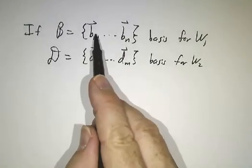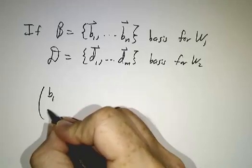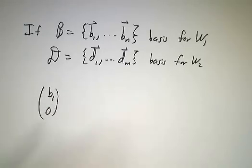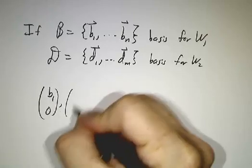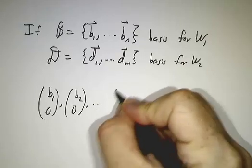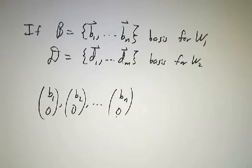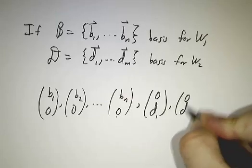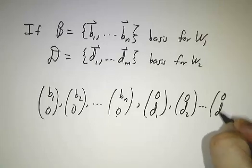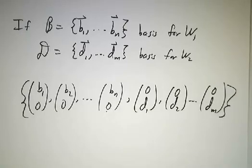Now, these vectors are not in the direct sum, and neither are these. However, you could have a vector b₁ followed by a 0. That's in the direct sum, because the direct sum is an ordered pair - something in W₁ and something in W₂. So you can take all those basis vectors and just pad them with zeros, and then you can take all the other basis vectors and pad them with zeros on the top. And I claim that this is a basis for the direct sum.